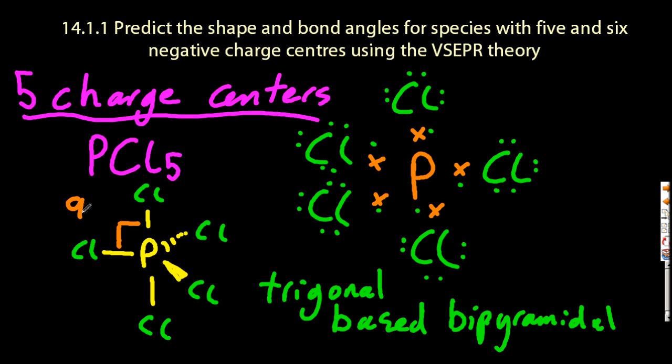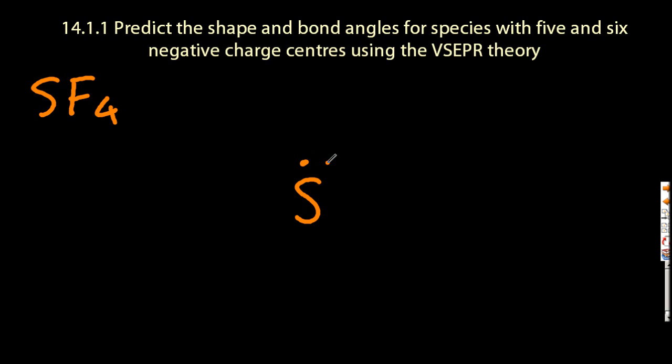It has two bond angles: 90 degrees there from the axis to the equator, and 120 around the equatorial chlorines. It sounds confusing, but there's a little video at the end that should explain it even better.